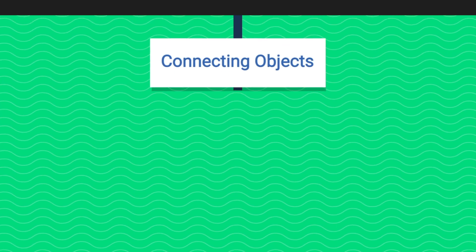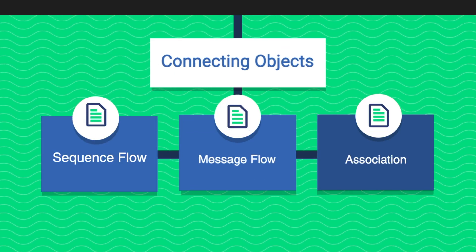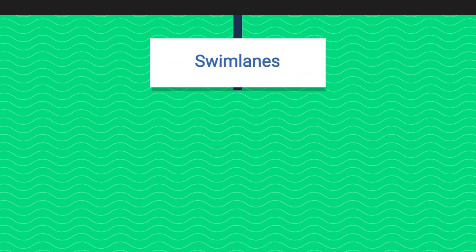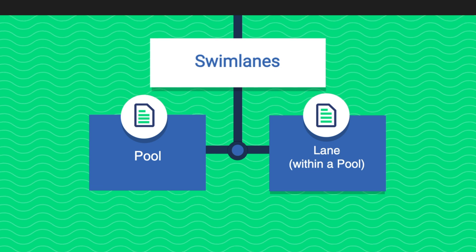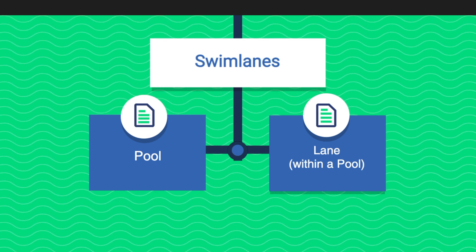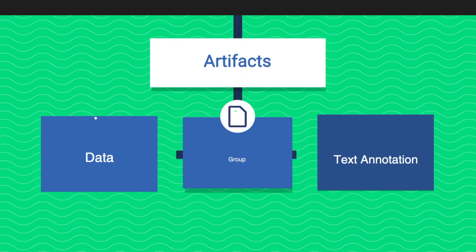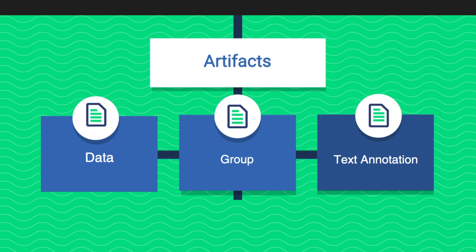Sequence flow, message flow, and association are the connecting objects. You can also use pools or lanes within a pool to group similar objects. BPMN also provides you data objects, inputs, outputs, groups, and text annotations.